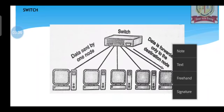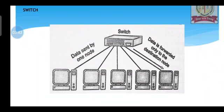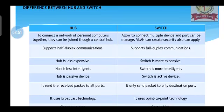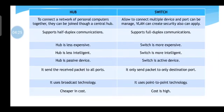Then we have a switch. I hope you have seen switches in our computer labs, as various devices are connected to each other via a LAN via a switch. The difference between hub and switch: to connect a network of personal computers together they can be joined through a central hub, but if multiple devices are required to be connected with the help of LAN or VLAN then we go for a switch. Hub is less expensive whereas switch is more expensive, and accordingly hub is less intelligent while switch is more intelligent. Hub is a passive device; switch is an active device. Hub sends the received packet to all ports, while switch sends packets only to the destination port. Hub uses broadcast technology — one to all; switch uses point-to-point technology — one to one.